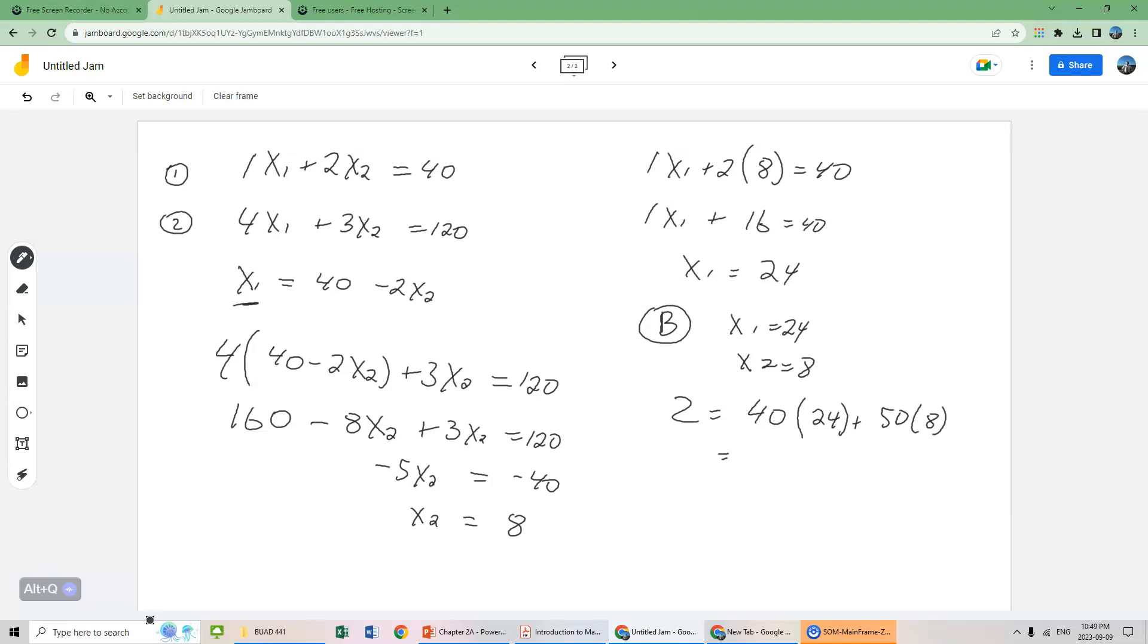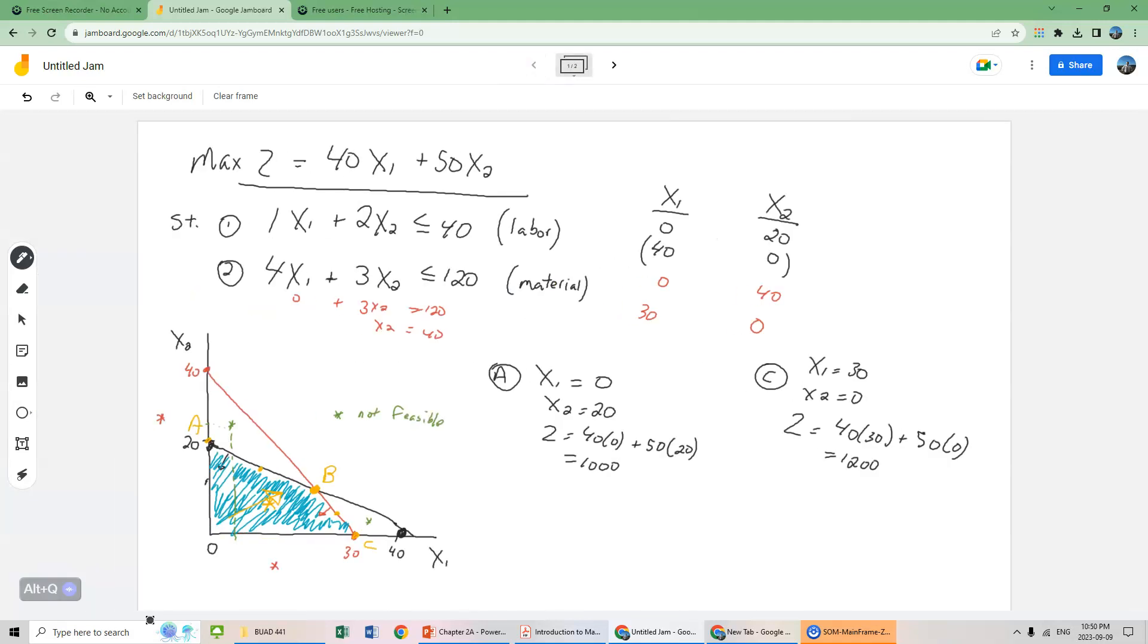So 40 times 24, if memory serves me correctly, that's 960, plus 400. Add those together, and we get 1360. So our profit, if we go back to our first page here, our profit is maximized at this point, point B. We are maximizing our profit if we produce 24 bowls and 8 mugs. That will give us a daily profit of 1360.